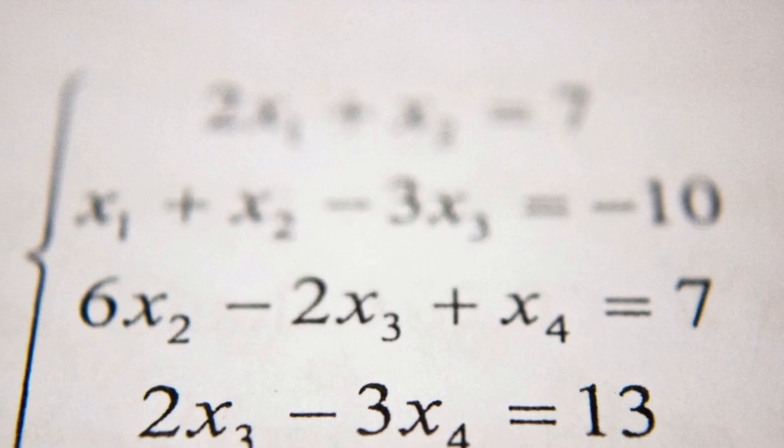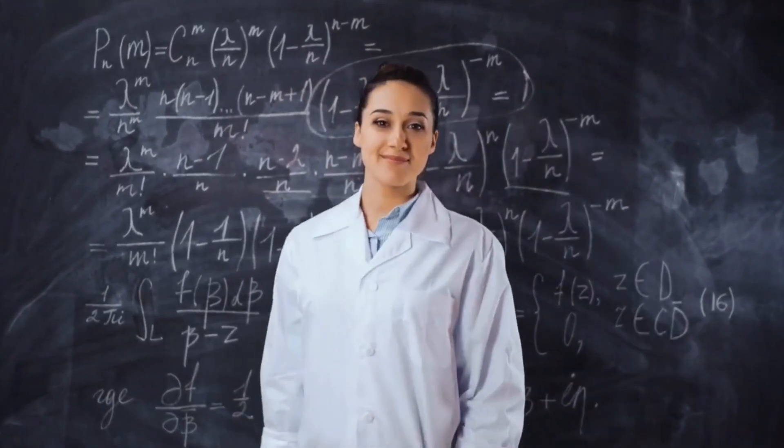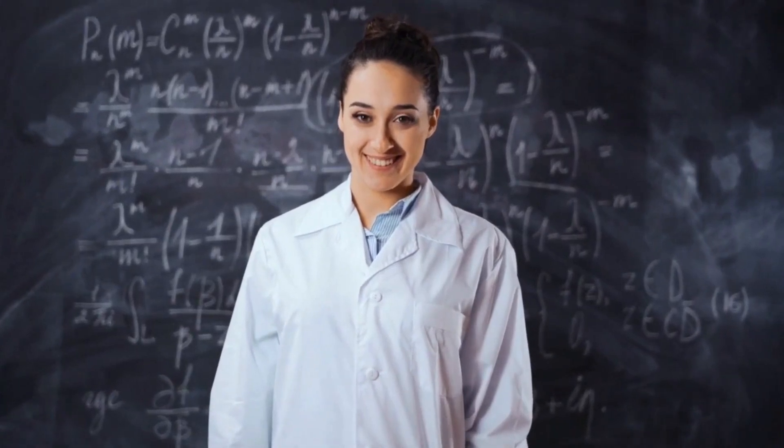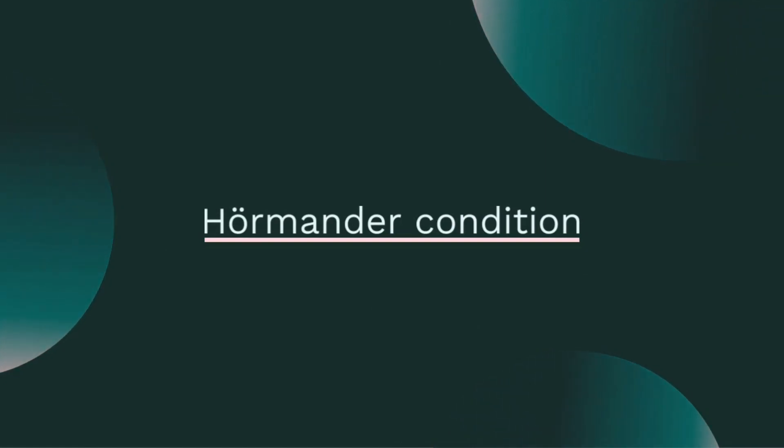The theorem essentially states that if you have a set of smooth vector fields that satisfy certain conditions, you can find a unique solution to your PDE. Given a set of vector fields V1, V2, Vn satisfying the Hermander condition, the operator generated by these vector fields, denoted by OP(V1, V2, Vn), is hypoelliptic.